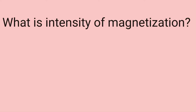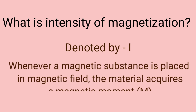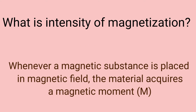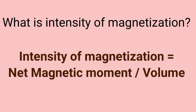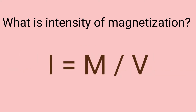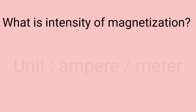What is intensity of magnetization? It is denoted by the letter I. Whenever a magnetic substance is placed in a magnetic field, the material will acquire a magnetic moment. So the intensity of magnetization is the magnetic moment per unit volume, that is I equals M upon V. The SI unit of intensity of magnetization is ampere per meter.